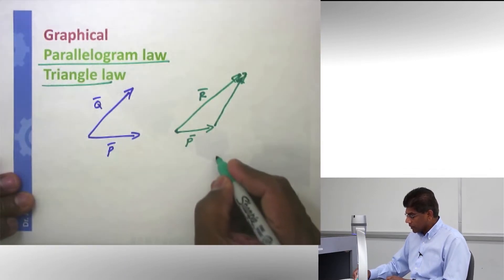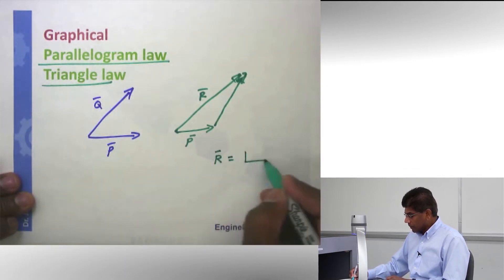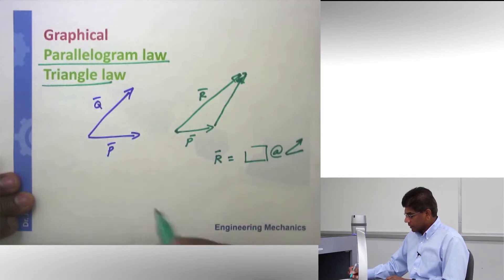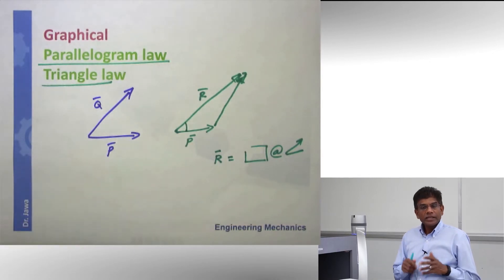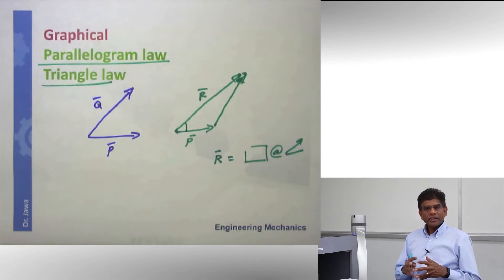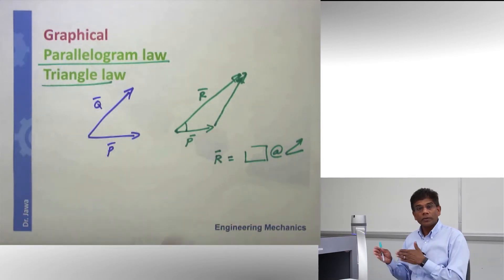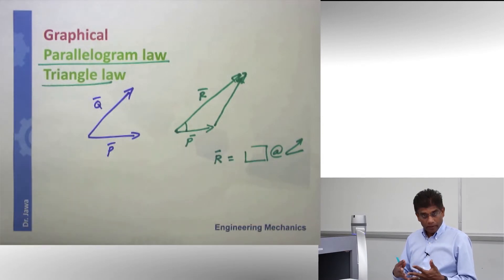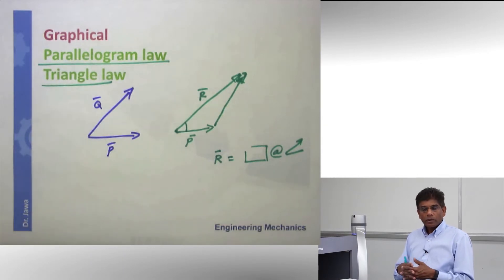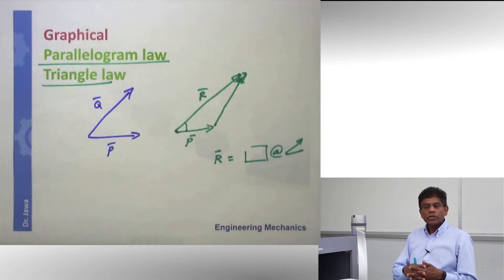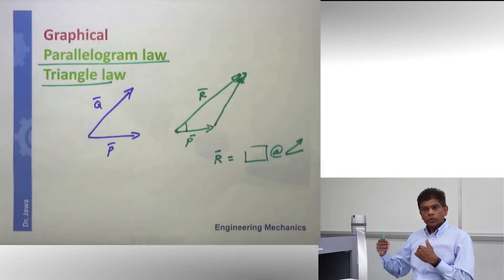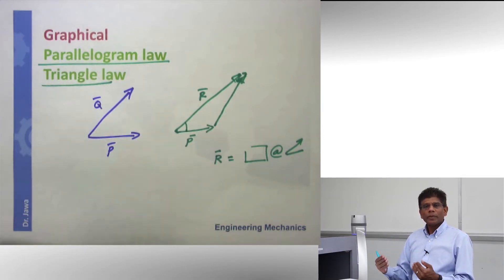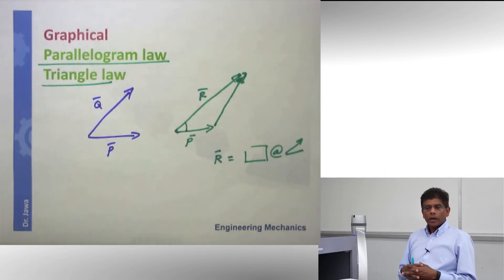Once you have found the resultant, express the answer using magnitude and direction — please do not forget that. Graphical approach is simple and easy, but it is not very accurate because you have to draw to scale. So often we would like to find other ways of solving it. One way would be using an analytical approach, which involves formulas. Instead of drawing to scale, you just make a sketch and use the information to calculate more accurately.